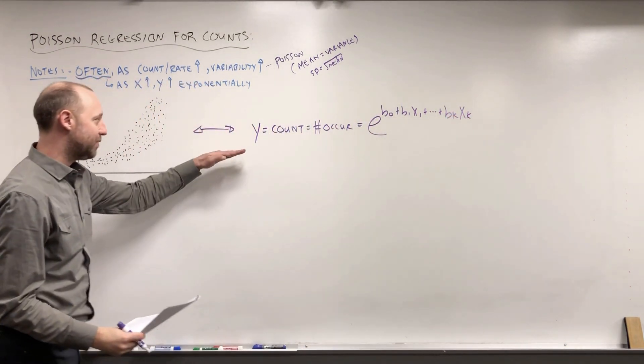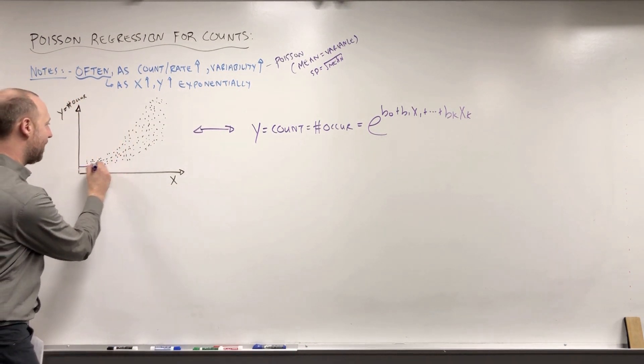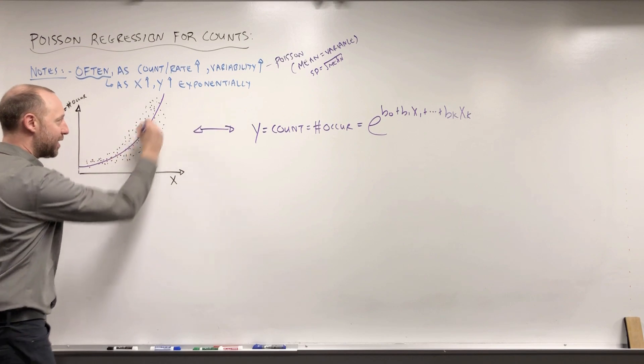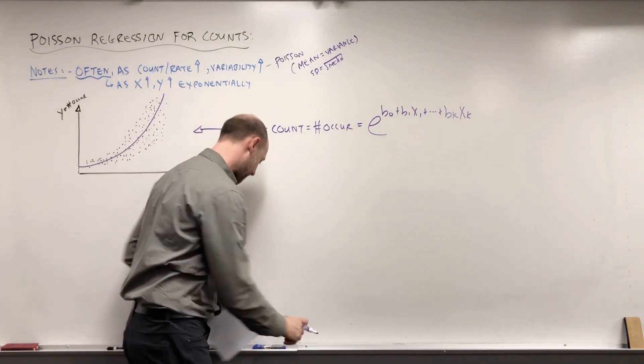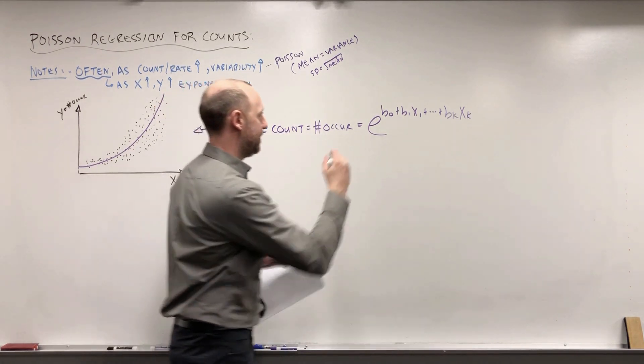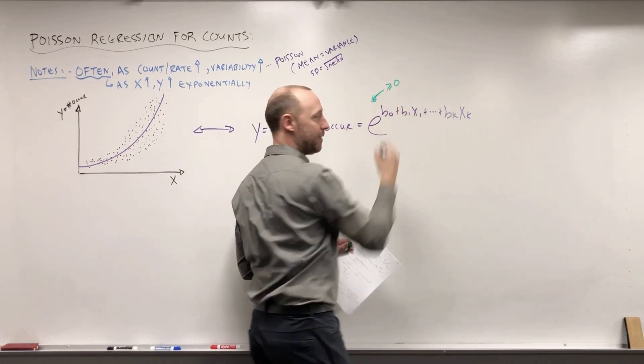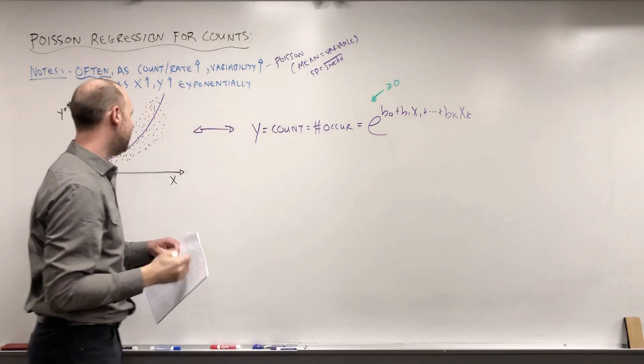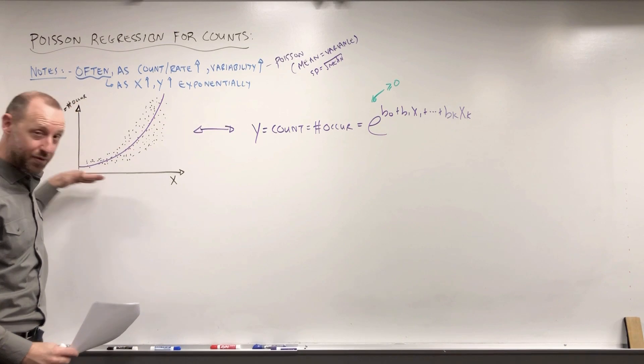As you can see, essentially what this is doing is it's going to fit an exponential shaped curve to that. If you remember, this is going to always have to be greater or equal to zero by exponentiating it, which fits well with modeling the number of occurrences. It's always going to have to be zero or more.